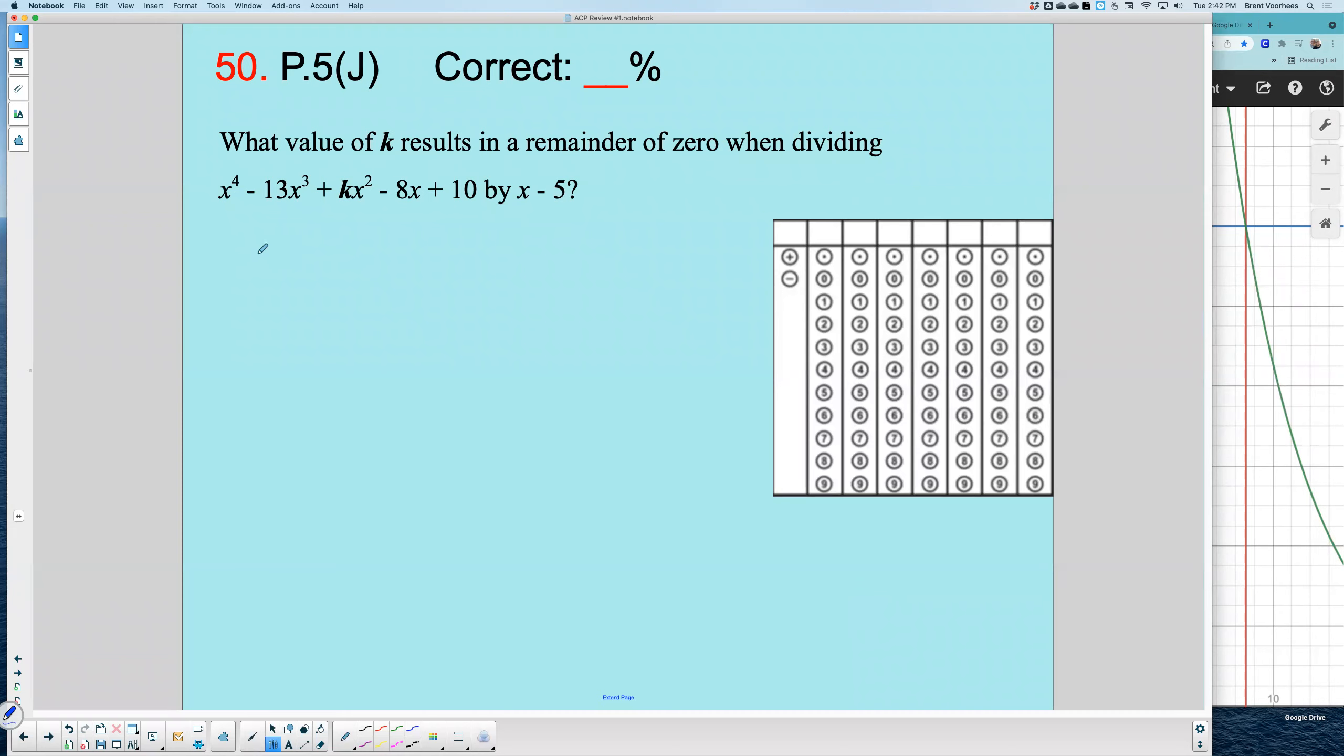The first thing is to solve the divisor equals zero. So in this particular case, the thing doing the dividing is the x minus 5. So let's say x minus 5 equals zero.